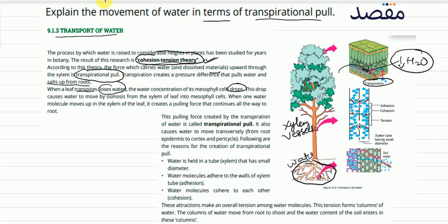When one water molecule moves up into the xylem of the leaf, it creates a pulling force that continues all the way to the root. This pulling force created by the transpiration of water is called transpiration pull. The pulling force causes water molecules to move upward from the roots. Because this force is created by transpiration in the leaves, it's called transpiration pull.